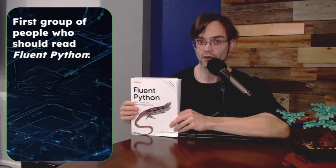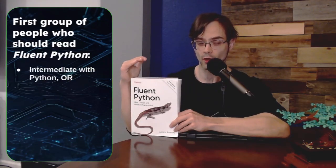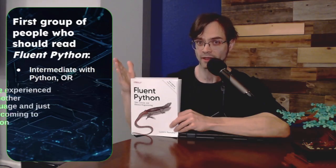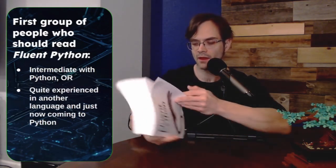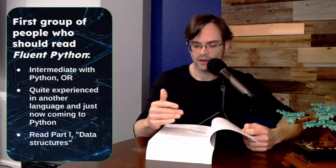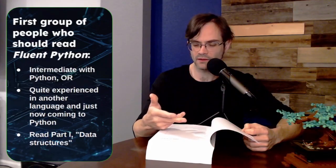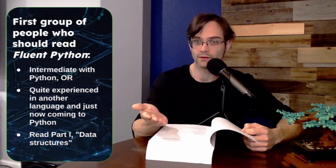One group of people that's going to get a lot of value out of Fluent Python are people who are sort of intermediate in Python already, or people who are quite experienced in another language and are just now coming to Python. And people in that group are definitely going to want to read part one, and he calls this part of the book data structures. But to me, this part of the book is really just Python basics. It's stuff everybody who's going to use Python in a serious way should know.